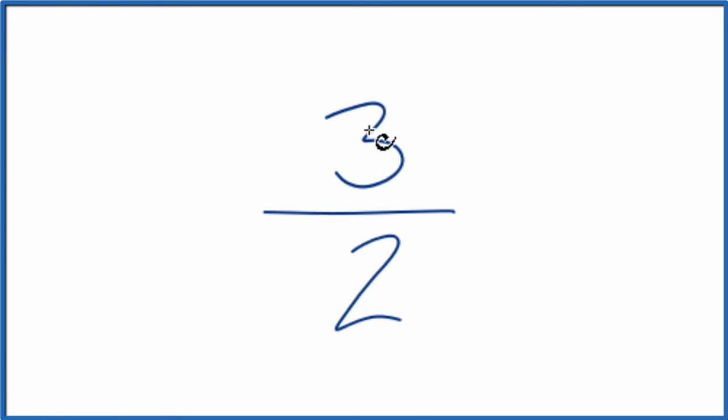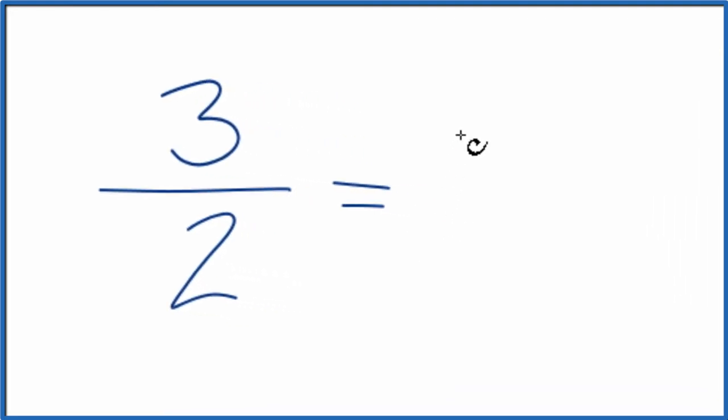So why don't we change 3 over 2 to a mixed fraction? And here's how we do it. We're going to take 3 and divide 2 into 3. So 2 goes into 3 once, with 1 left over. And we'll put that as 1 over 2.